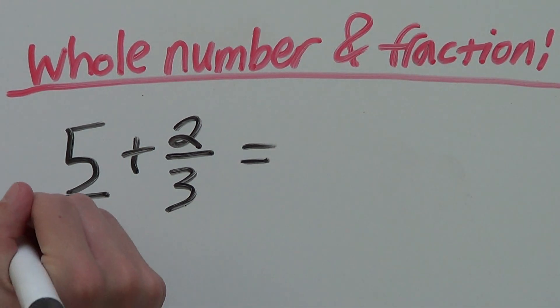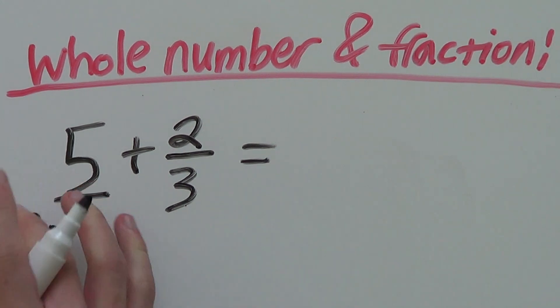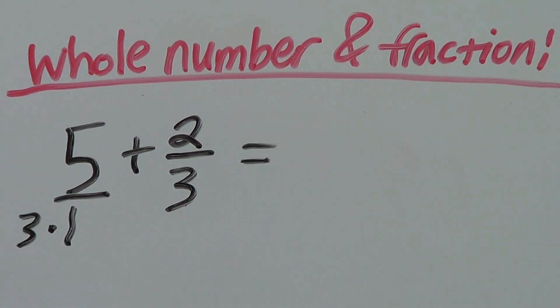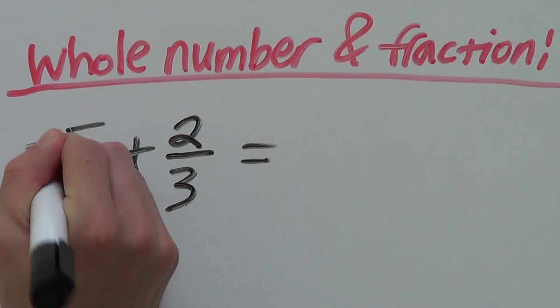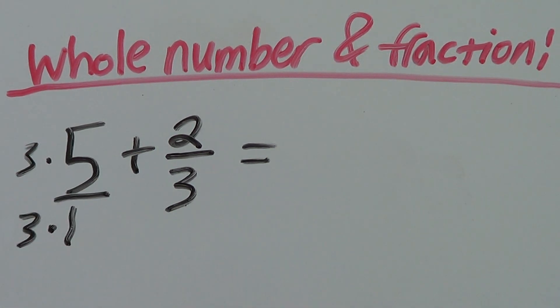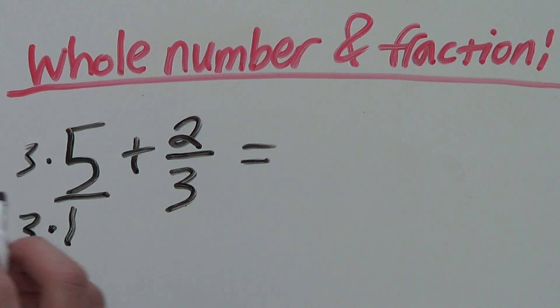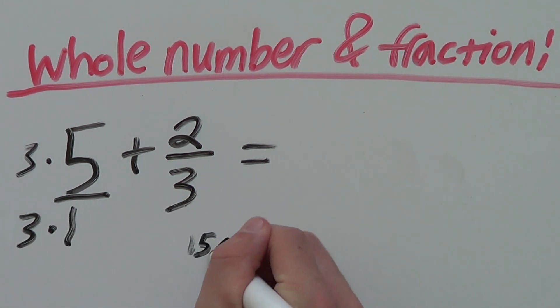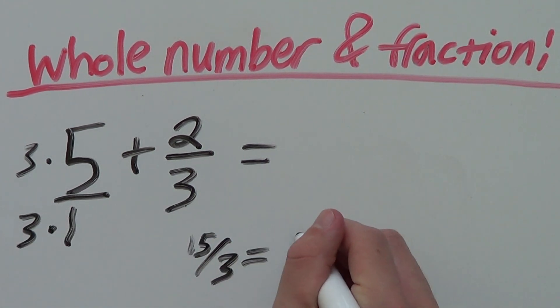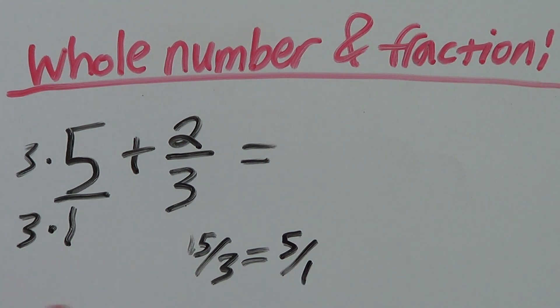We have to times the bottom by 3, but we also have to times the top by 3. In case you don't know why, if you do times it by 3, you'll get 15 over 3, which is equal to 5 over 1. So they are equivalent.